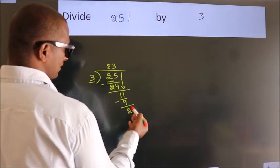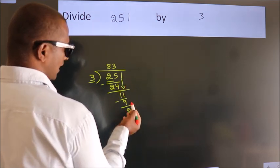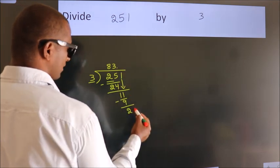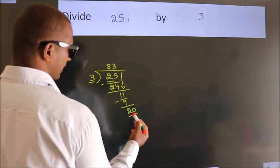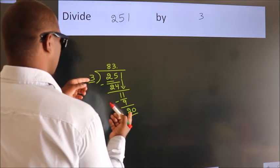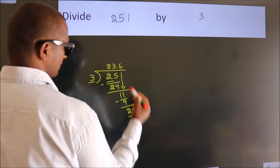After this, no more numbers to bring down. So what we do is we put a dot, take 0. So 20. A number close to 20 in the 3 table is 3×6=18.